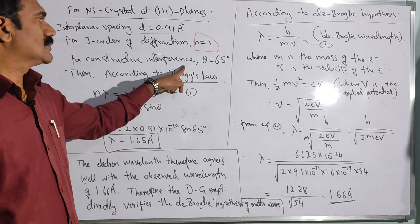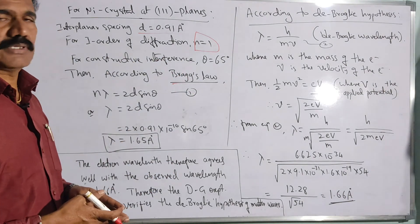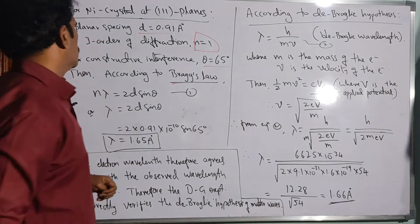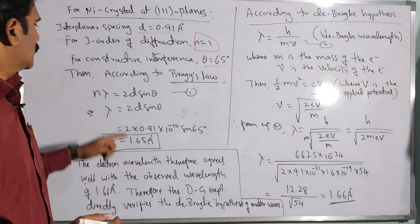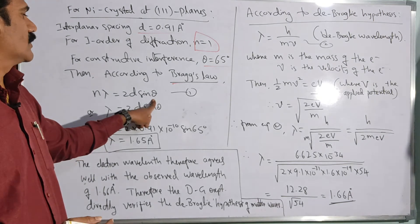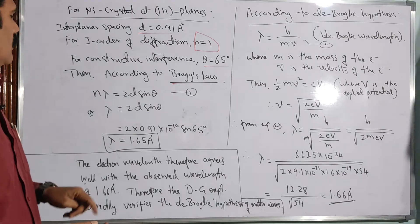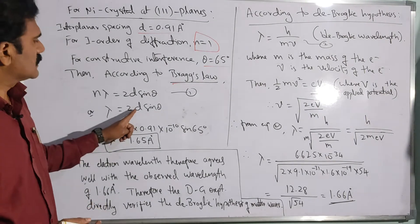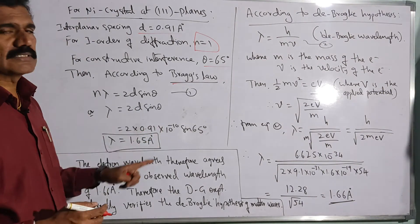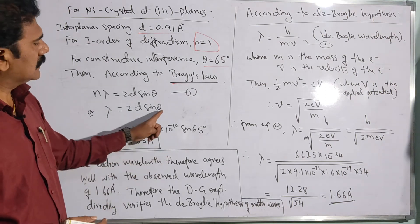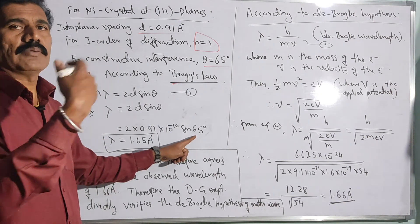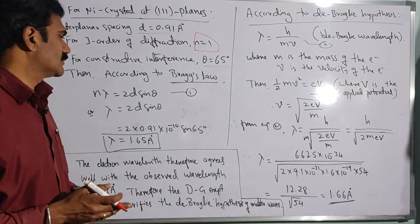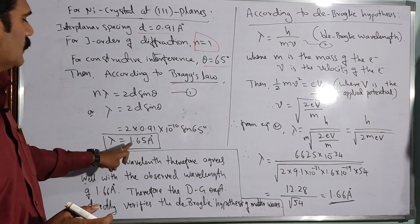For constructive interference — where maximum intensity is emitted after diffraction — that is what is actually observed at glancing angle theta equal to 65 degrees. Consider these values according to Bragg's law equation: n lambda equals 2d sin theta. Lambda equals 2d sin theta when n equals 1. Substitute the interplanar spacing d equal to 0.91 × 10⁻¹⁰ m (angstrom units). The glancing angle theta is 65 degrees, at which maximum intensity of the electron beam is detected. You will get the value of lambda equal to 1.65 angstrom units. This is the wavelength of the electron beam calculated according to Bragg's law.